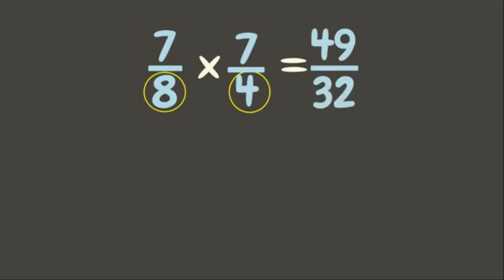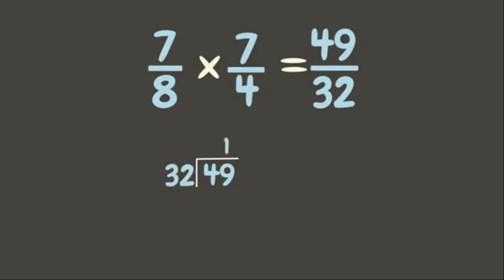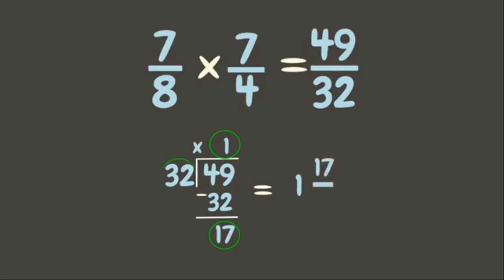Since our answer is an improper fraction, we need to change this into a mixed number. Forty-nine divided by thirty-two: one. One times thirty-two is thirty-two; forty-nine minus thirty-two is seventeen. Our answer is one and seventeen thirty-seconds.